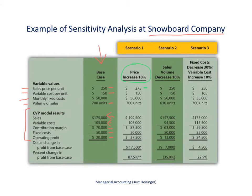That $275 is simply a 10% increase: 10% times $250 is $25, and adding that to $250 gives us $275 as our new sales price per unit. Everything else stays the same in this example — the $150 per unit variable cost, $50,000 for total fixed cost, and 700 units. We just changed the sales price.